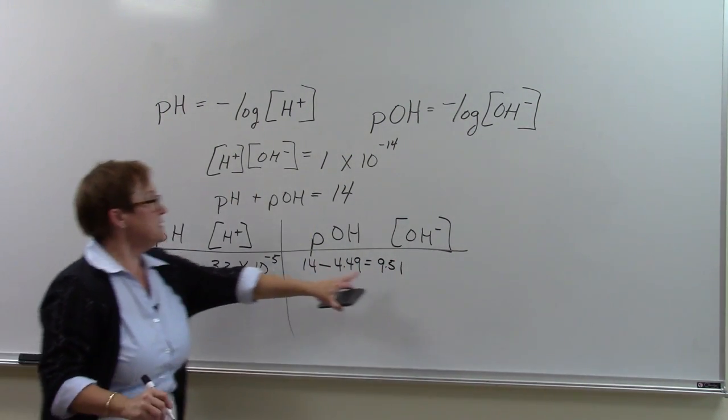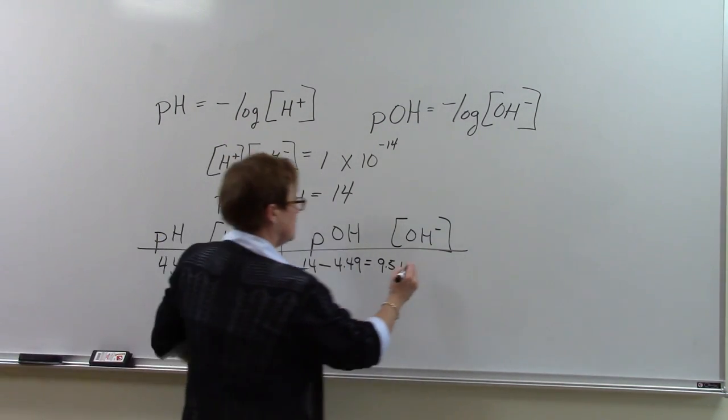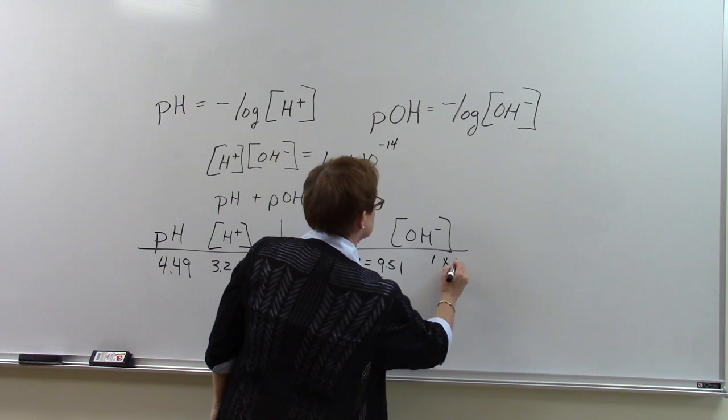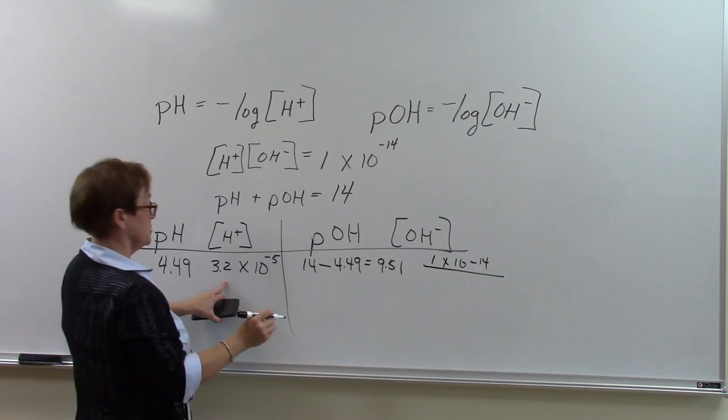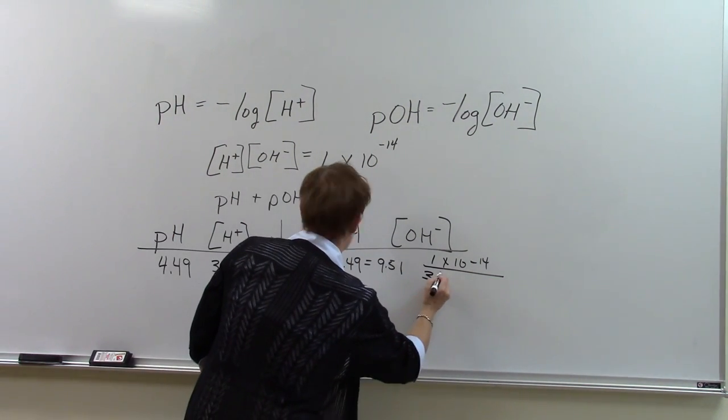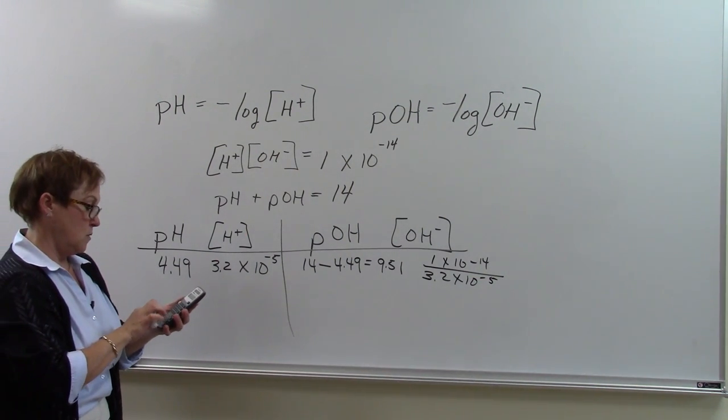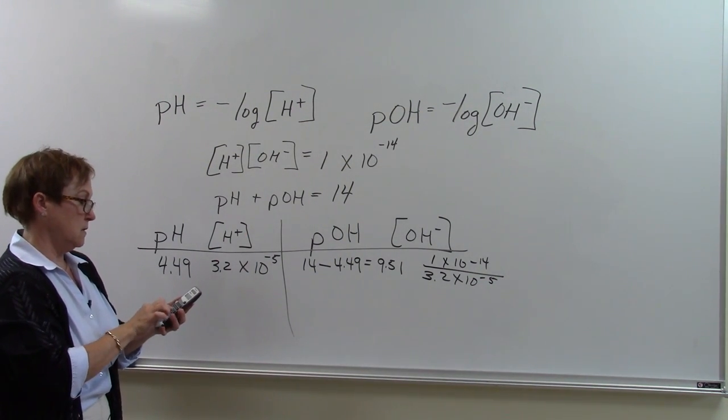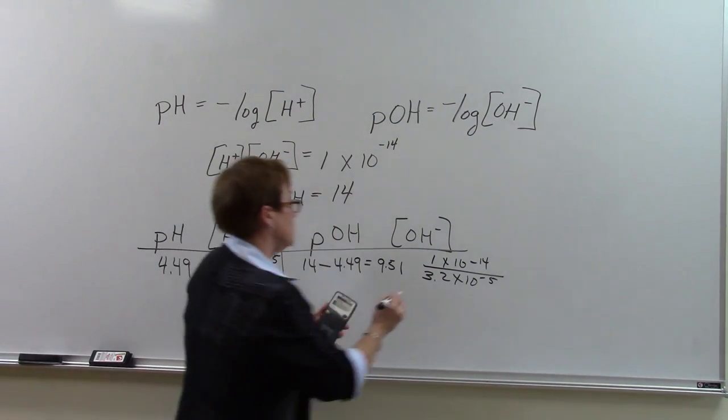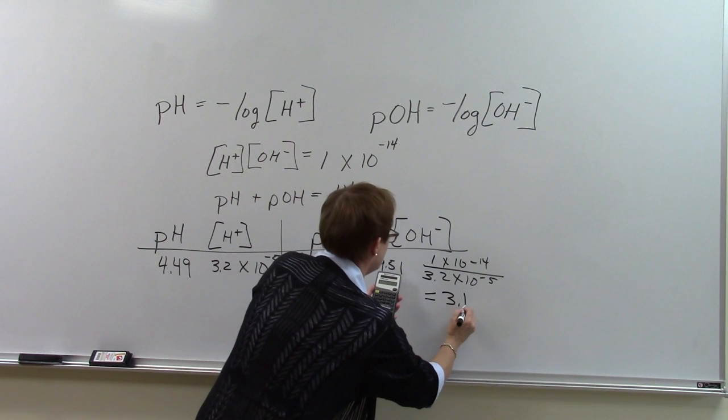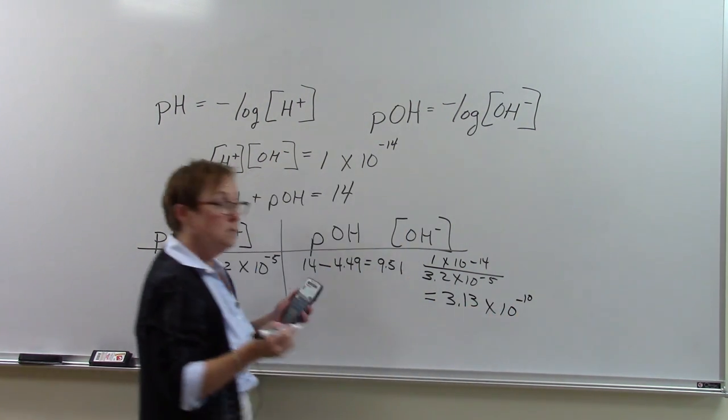What does that mean the hydroxide ion concentration is? The hydroxide ion concentration is 1 times 10 to the negative 14th divided by the hydrogen ion concentration, which is equal to 3.13 times 10 to the negative 10th molar.